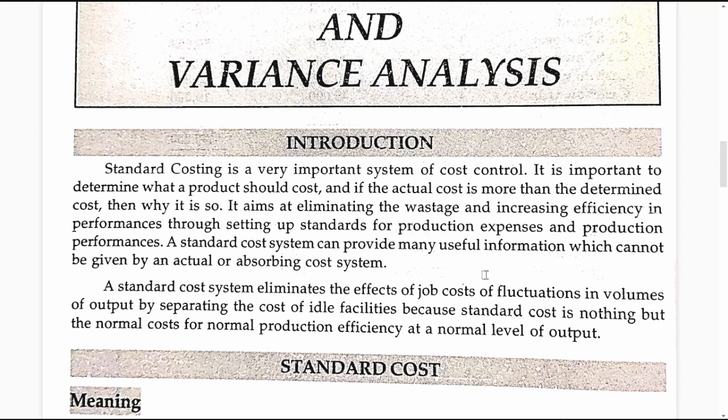It is important to determine what a product should cost, and if the actual cost is more than the determined cost, then why is it so? What are the reasons contributing to the differences between the actual cost and standard cost? How to correct such deviations and accommodate the actual cost within the predetermined standard cost?